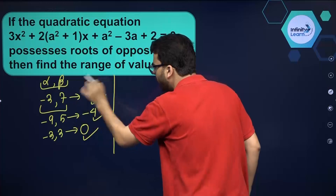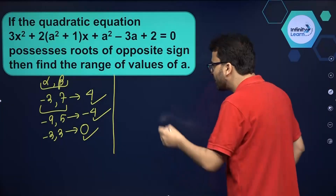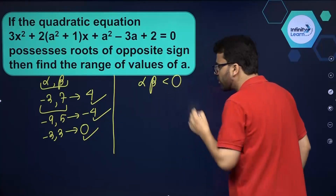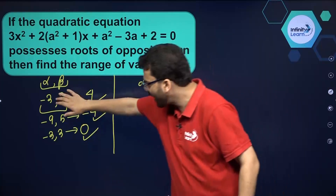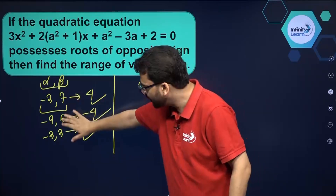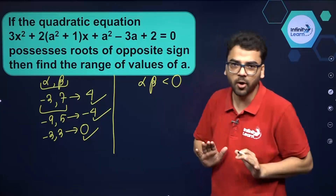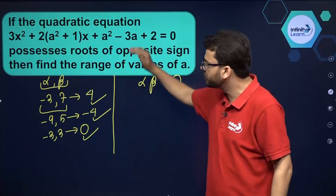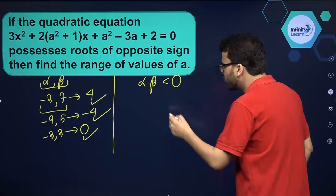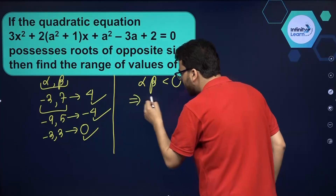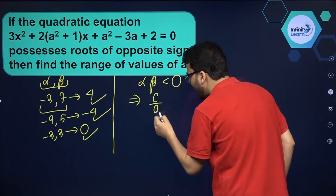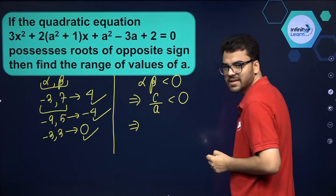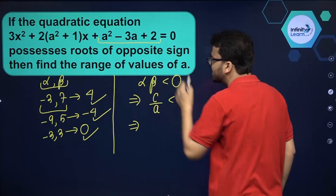But we can take one thing. Since the roots are of opposite signs, it is for sure that the product of the roots will be negative — that is for sure. Whatever the magnitudes are, the product will every time be negative. So we are going to use the product of roots of this quadratic equation. The product of roots for a quadratic equation is c by a, and that is less than 0.